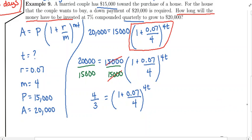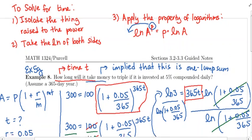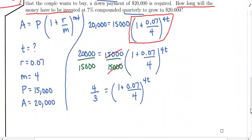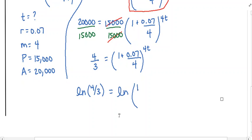Now, what's your next step? Once we've isolated the thing raised to the power, we're going to take the natural log of both sides, because the logarithm is the tool that is going to bring T out of the power. So I'm going to take the natural log of both sides — the natural log has to go on the left, and whatever you do to one side you have to do to the other.